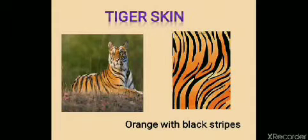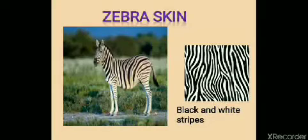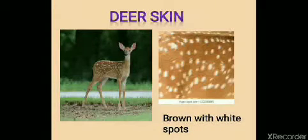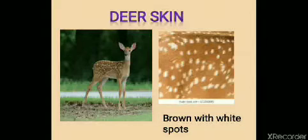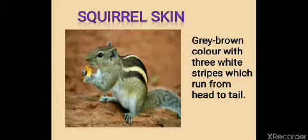In animals, we see some patterns in their skin. For example, the tiger has orange with black stripes on its body. Look at the picture of the zebra — the zebra has black and white stripes on its body. In leopard, the skin has golden yellow and black spots. The skin of the deer is brown in color with white spots on it. Look at the skin of the squirrel — it has grey-brown color with three white stripes which run from head to tail.